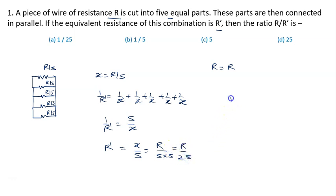Now we have to calculate the value of R upon R dash. R is given by R, and R dash is given to us as R upon 25. So 25 will come here. We can cancel R. Finally we will get R upon R dash equal to 25. So the right answer of the problem will be option D, that is 25.